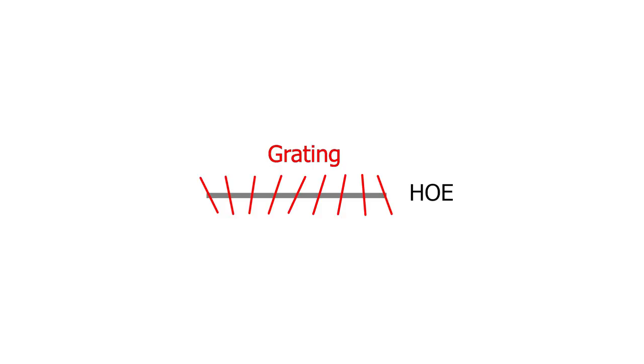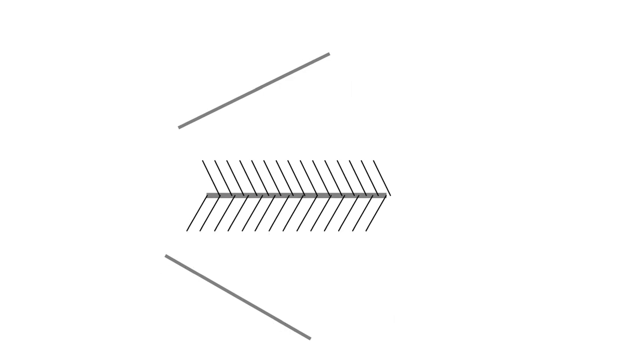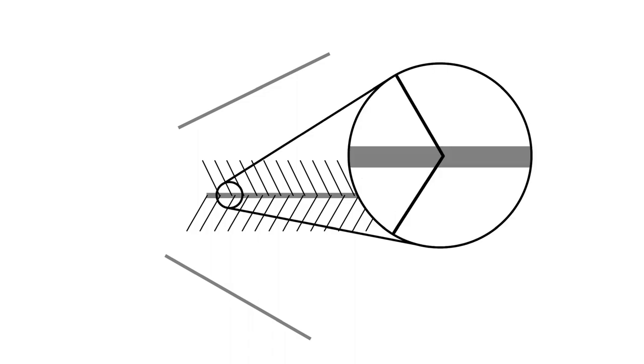Starting with an HOE and a target grating, we first initialize the two glass surfaces to zero. Then we trace rays through the glass and collect them on the HOE.